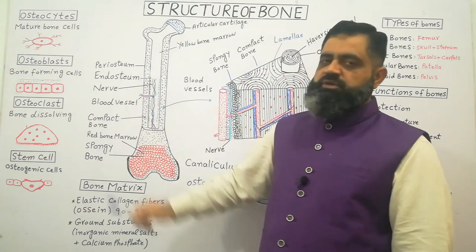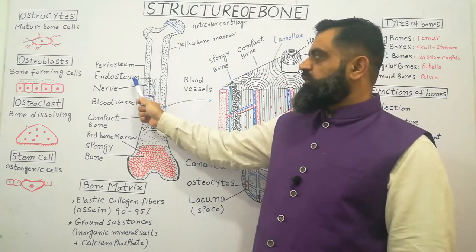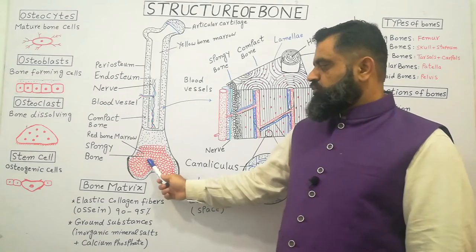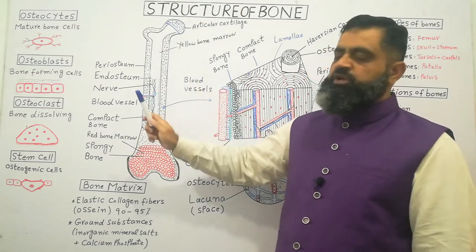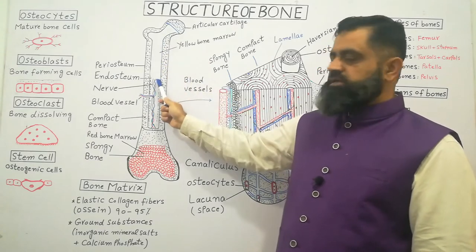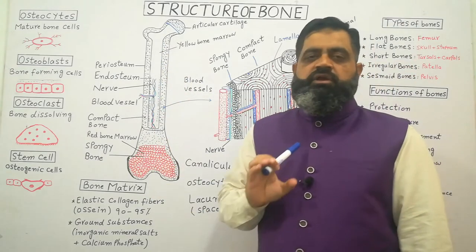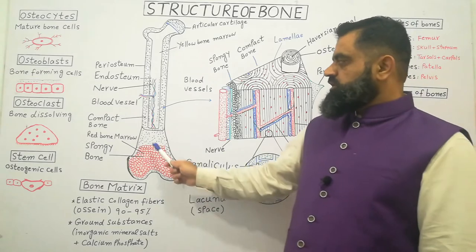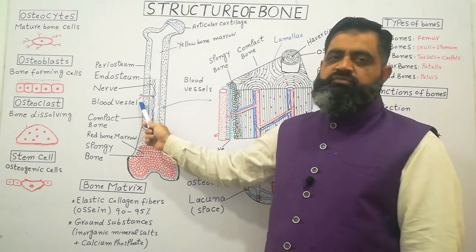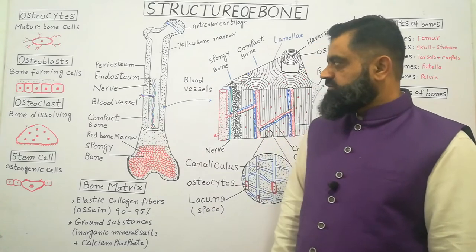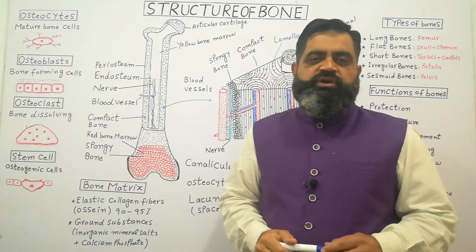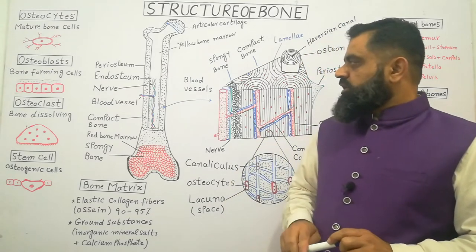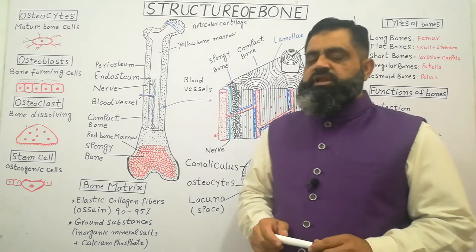The outermost layer of a bone is known as the periosteum, while the innermost layer is known as the endosteum. Bones contain red bone marrow and yellow bone marrow. Yellow bone marrow is located in the central cavity inside the bone, while red bone marrow is present in the sponge-like cavities of spongy bone. Bones also have blood vessel supply, nerve supply, and vessels from the lymphatic system.